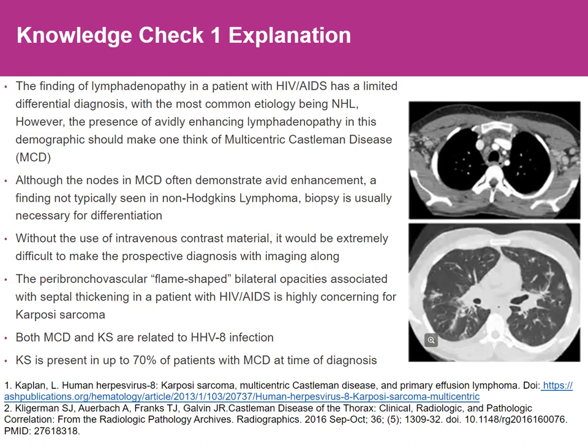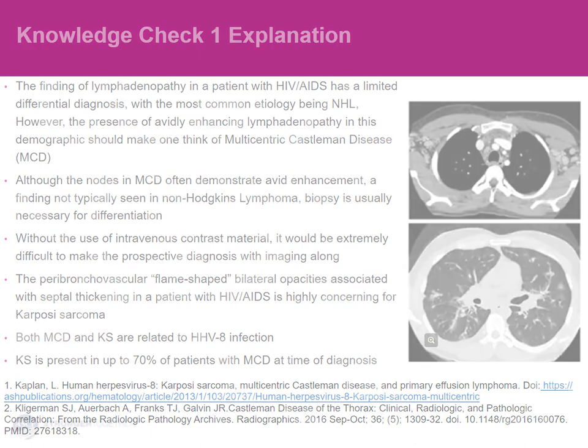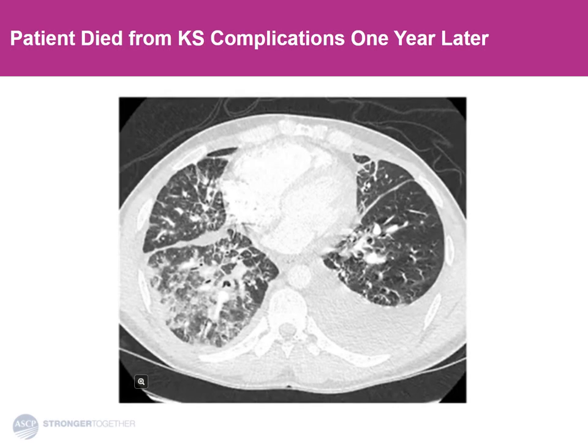One paper found that up to 70% of patients with multicentric Castleman disease will have Kaposi's sarcoma in nodes or elsewhere at the time of diagnosis. This is what happened about a year later — more fulminant Kaposi's. There's extensive abnormality here: increased thickening of the peribronchovascular interstitium, increasing ground glass, worsening septal thickening, and the patient passed away.